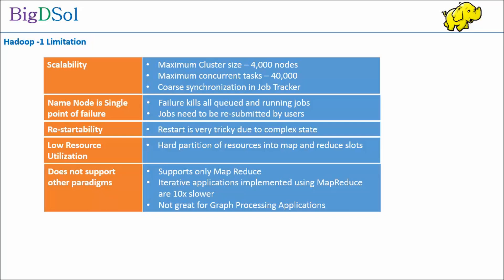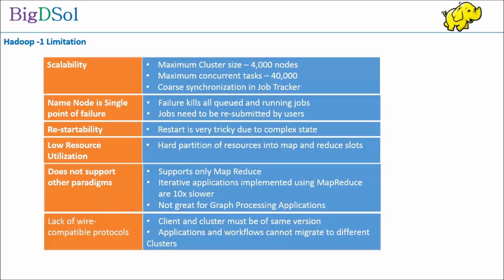Due to varied needs, applications which need iterative processing — like graph data processing — tend to be 10 times slower. And lastly, lack of wire-compatible protocols: client and cluster must be on the same version, and applications and workflows can't migrate to a different cluster.